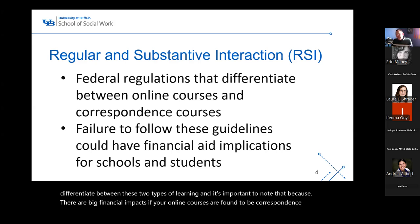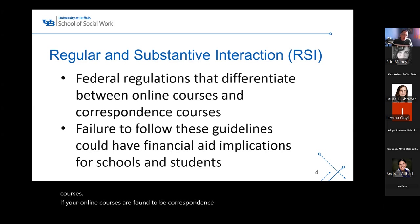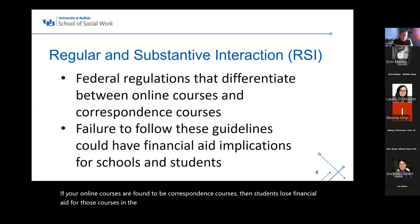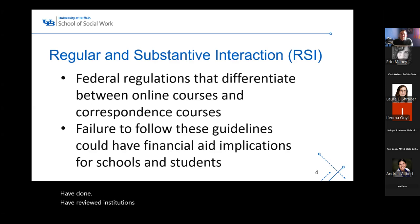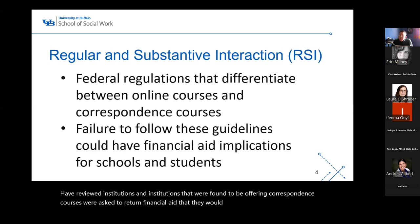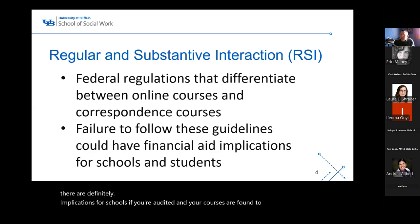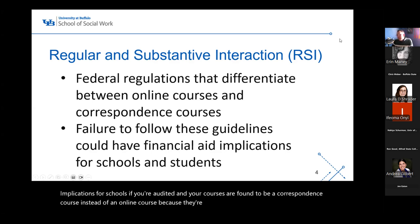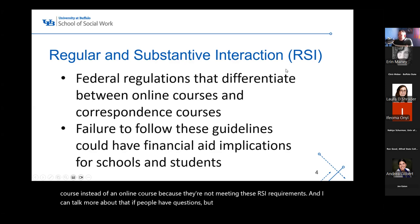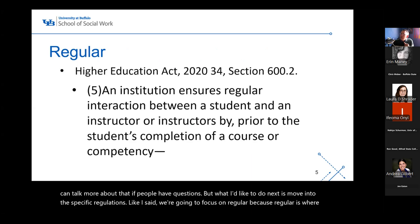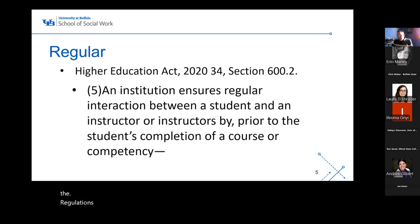There are significant financial impacts if your online courses are found to be correspondence courses — students lose financial aid for those courses. In the past, the DOE has reviewed institutions and those found to be offering correspondence courses were asked to return financial aid received for those courses. So there are definite implications for schools if audited and courses are found to be correspondence courses rather than online courses because they're not meeting RSI requirements.